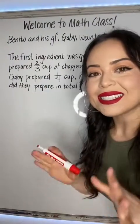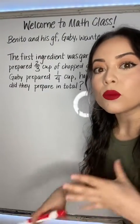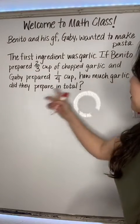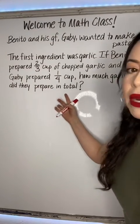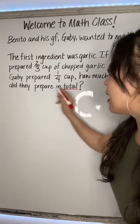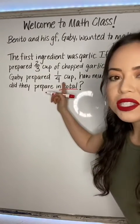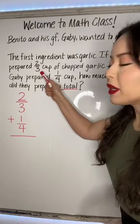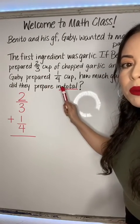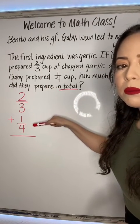If you ask me, you can never use too much garlic. The last sentence tells us what we need to do because it says how much garlic did they prepare in total, which means we need to add these two fractions. Benito prepared a two-thirds cup of garlic and Gabby prepared one-fourth cup of garlic.